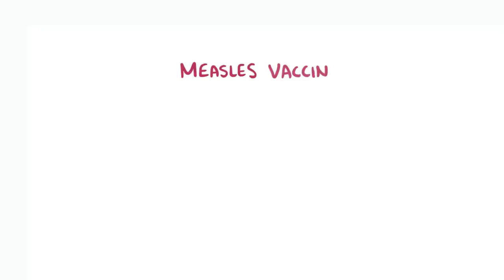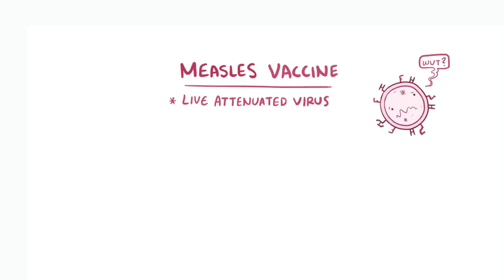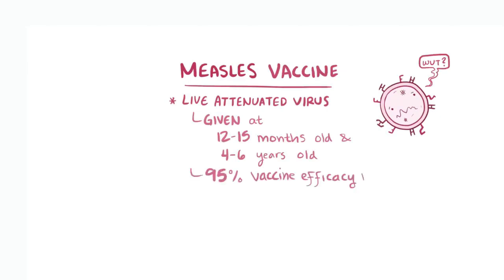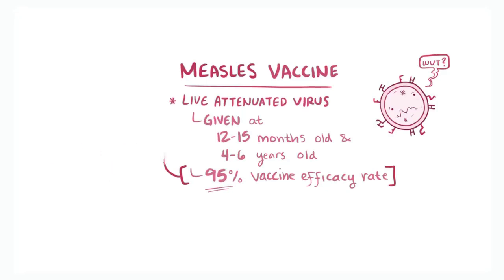The measles vaccine is a live attenuated immunization — essentially meaning it's been weakened — and it's given between 12 and 15 months of age, and again between 4 and 6 years of age. It has an impressive 95% vaccine efficacy rate, meaning that out of 100 cases of measles among unvaccinated people, 95 would have been prevented by the vaccine.